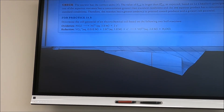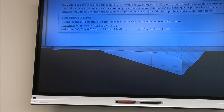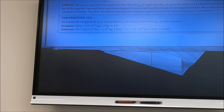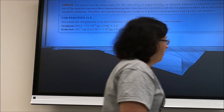For problem 19.8, we determine the cell potential of an electrochemical cell from two half reactions: oxidation — Ni(s) → Ni²⁺ (2 M) + 2e⁻; reduction — VO₂⁺ (0.010 M) + 2H⁺ (1 M) + e⁻ → VO²⁺ (2 M) + H₂O. First, we calculate E°cell using the standard half-cell table.